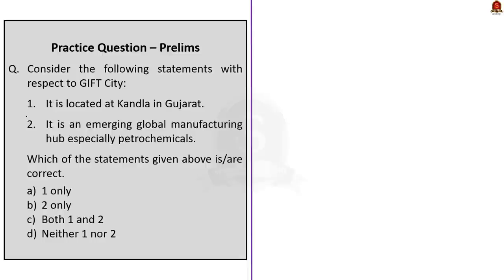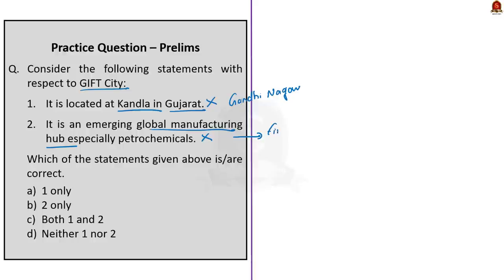The fourth question involves two statements about GIFT City. Statement one: it is located at Kandla in Gujarat — this is wrong. GIFT City (Gujarat International Finance Tec-City) is located in Gandhinagar, Gujarat. Statement two: it is an emerging global manufacturing hub focusing on petrochemicals — this is also wrong. GIFT City is a special economic zone designated to house India's first International Financial Service Centre — an integrated hub for financial and technological services, not manufacturing industries. Since both statements are incorrect, the correct answer is option D — neither one nor two.